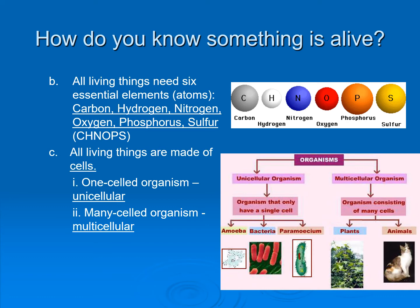All living things are made up of cells. There are two types. You can have unicellular, meaning they're made up of one cell — examples are your amoeba, bacteria, and paramecium, three things you looked at under a microscope in middle school. And then we have multicellular organisms, which are made up of many cells — those would be your plants and your animals.